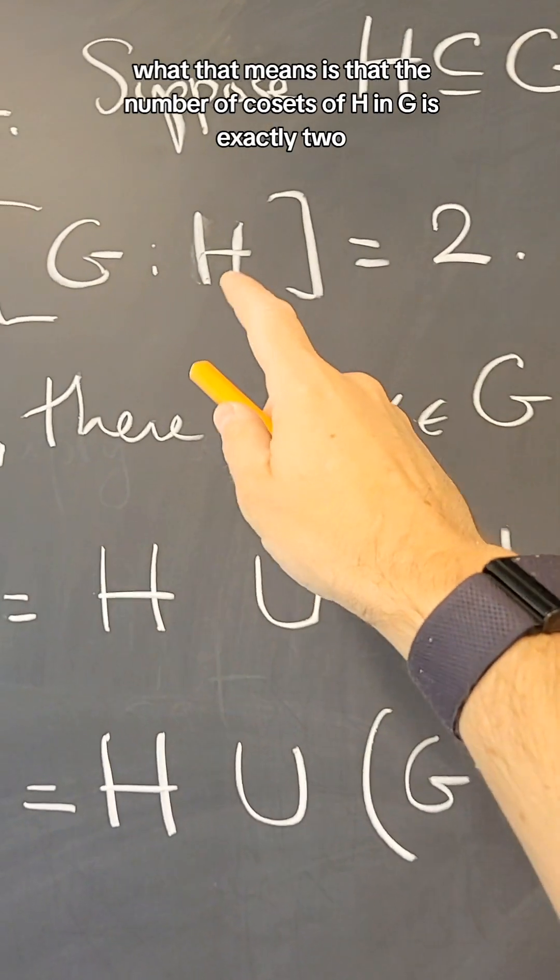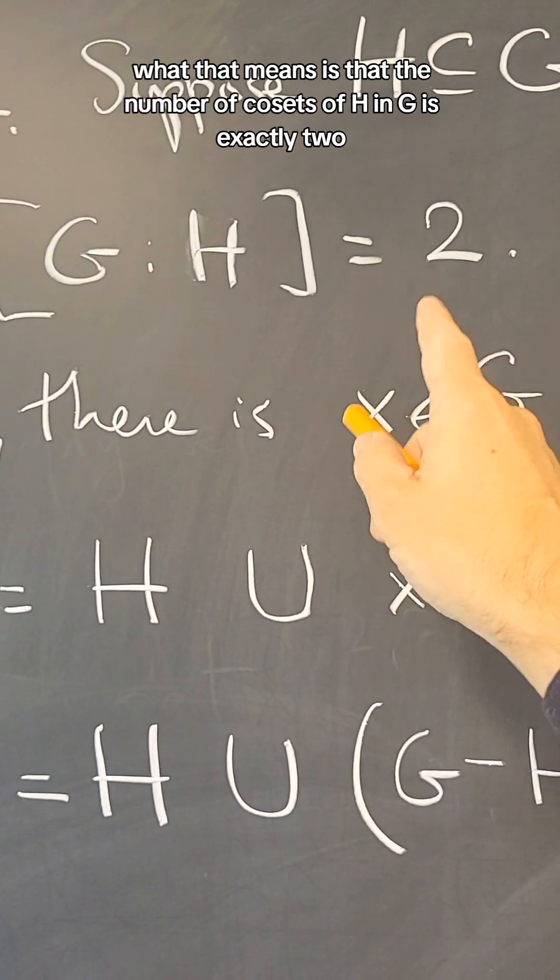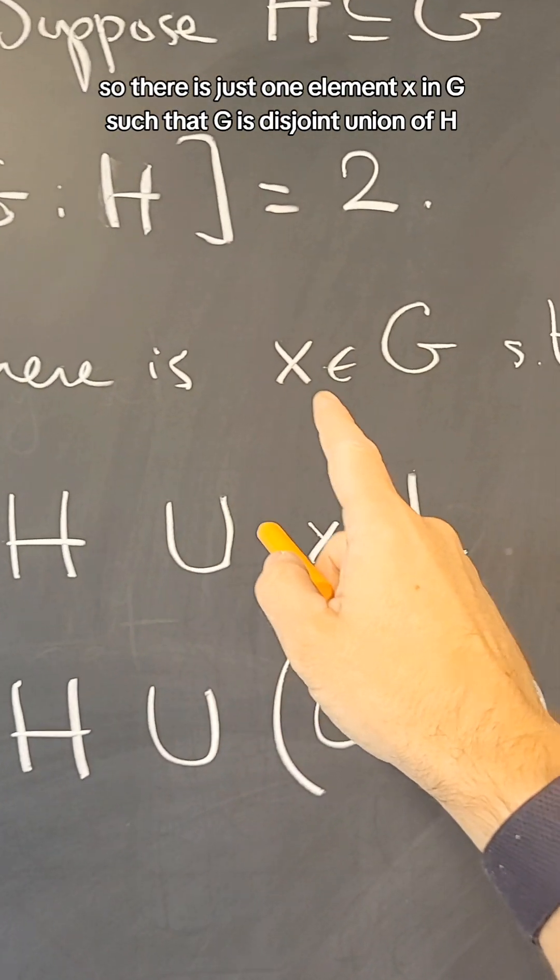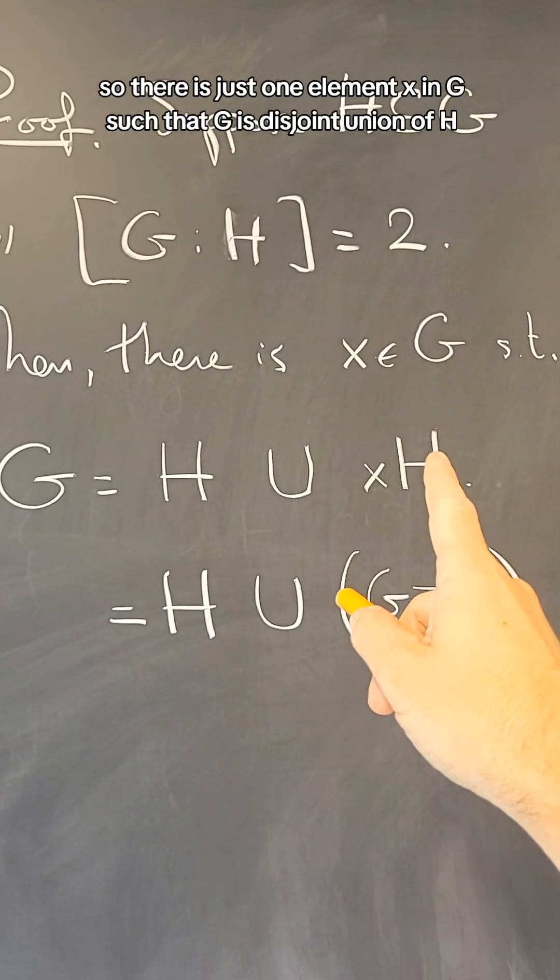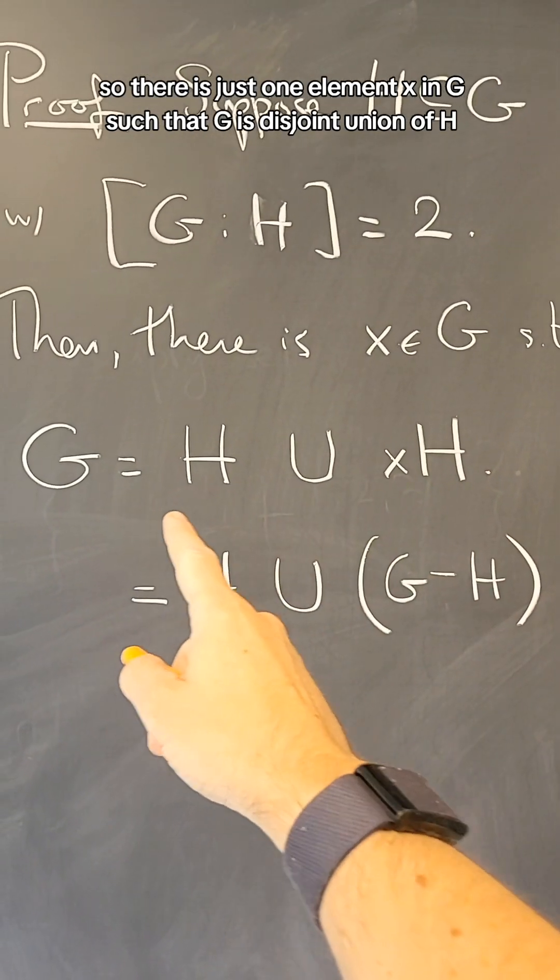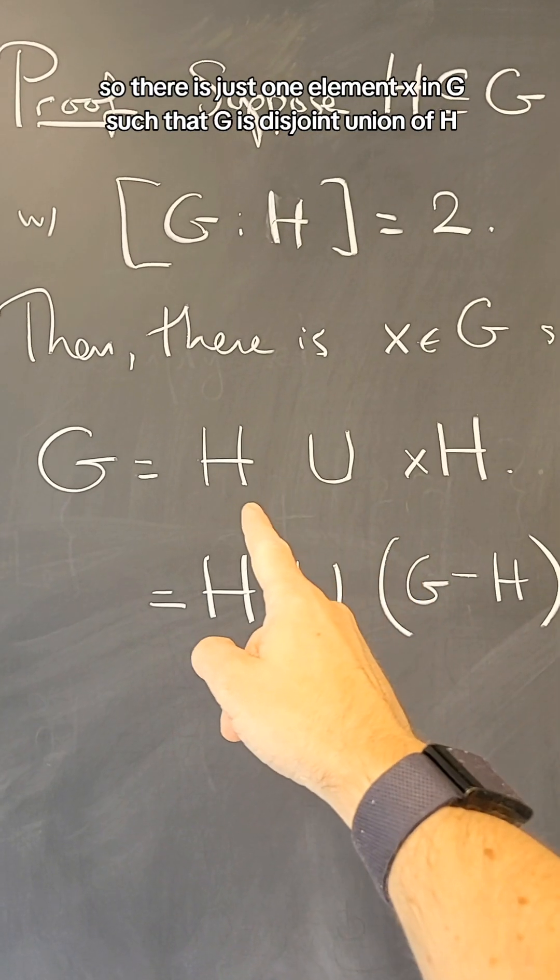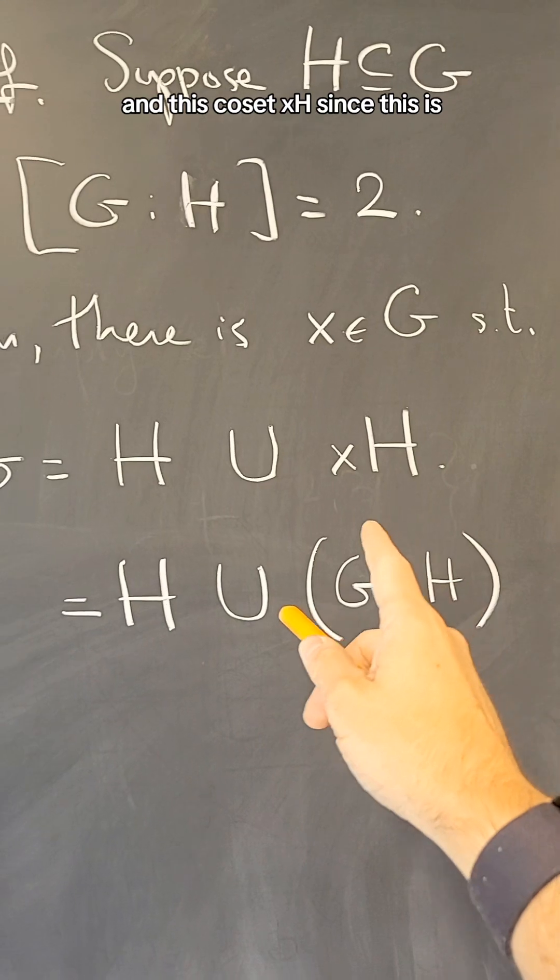What that means is that the number of cosets of H in G is exactly 2, so there is just one element x in G, such that G is disjoint union of H and this coset xH.